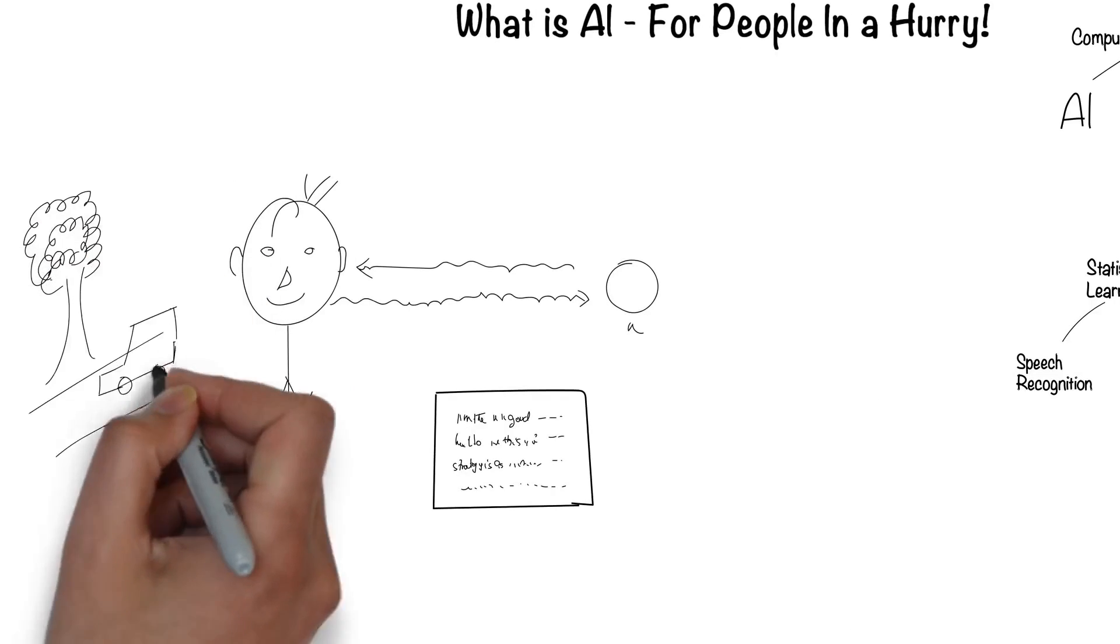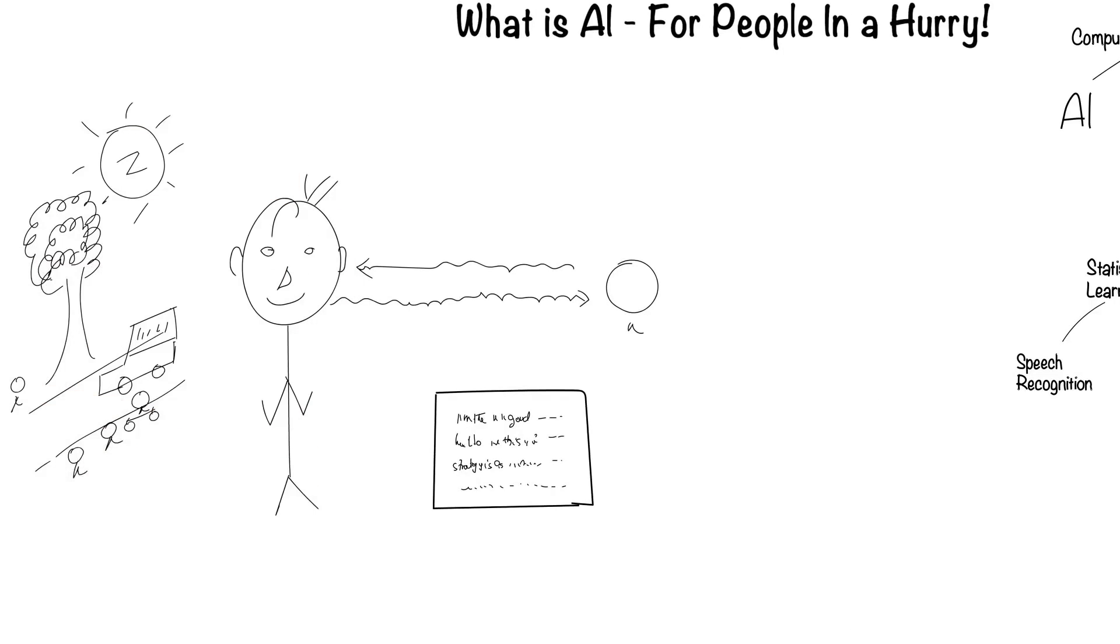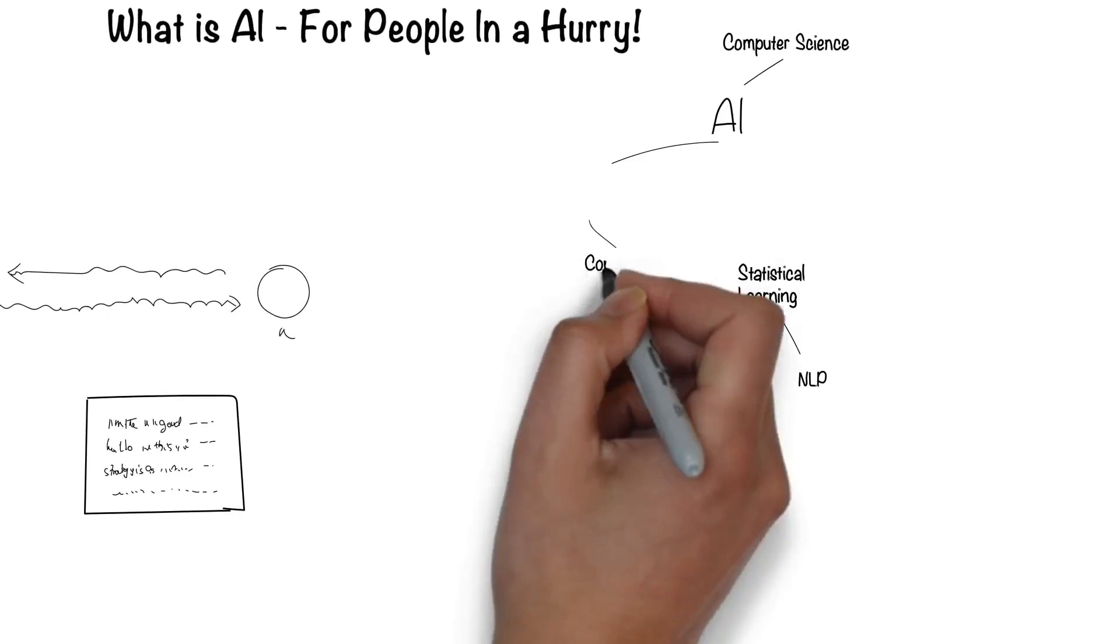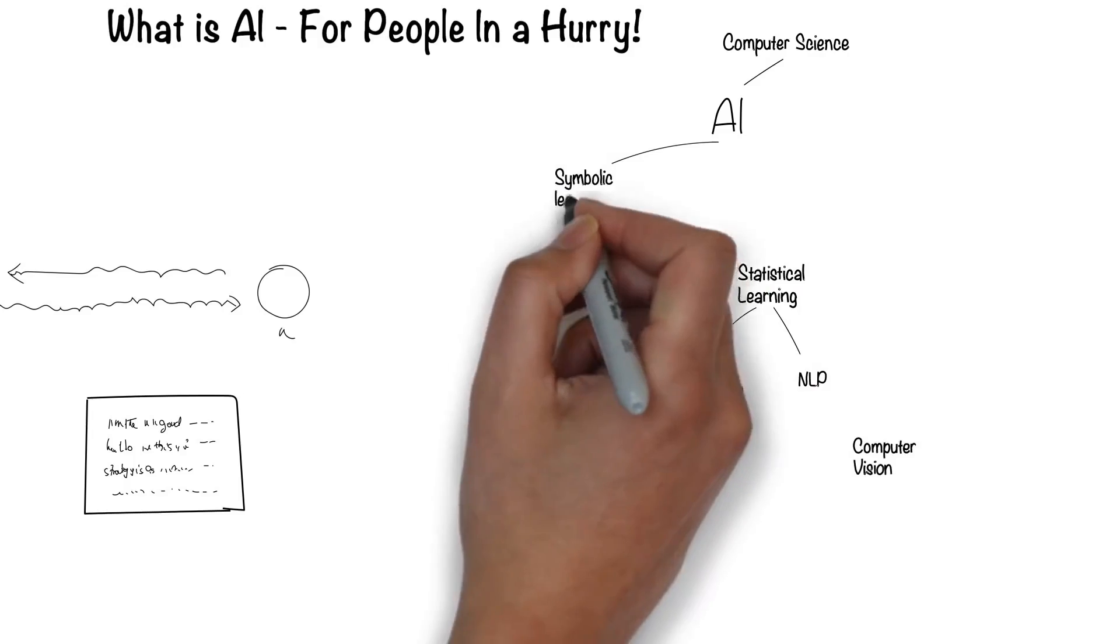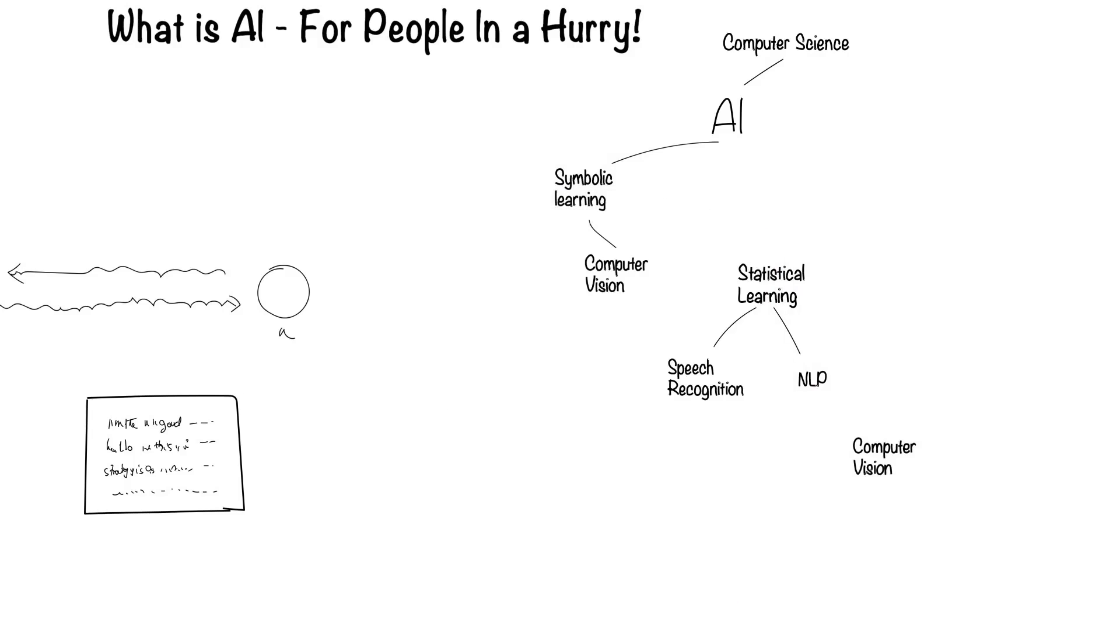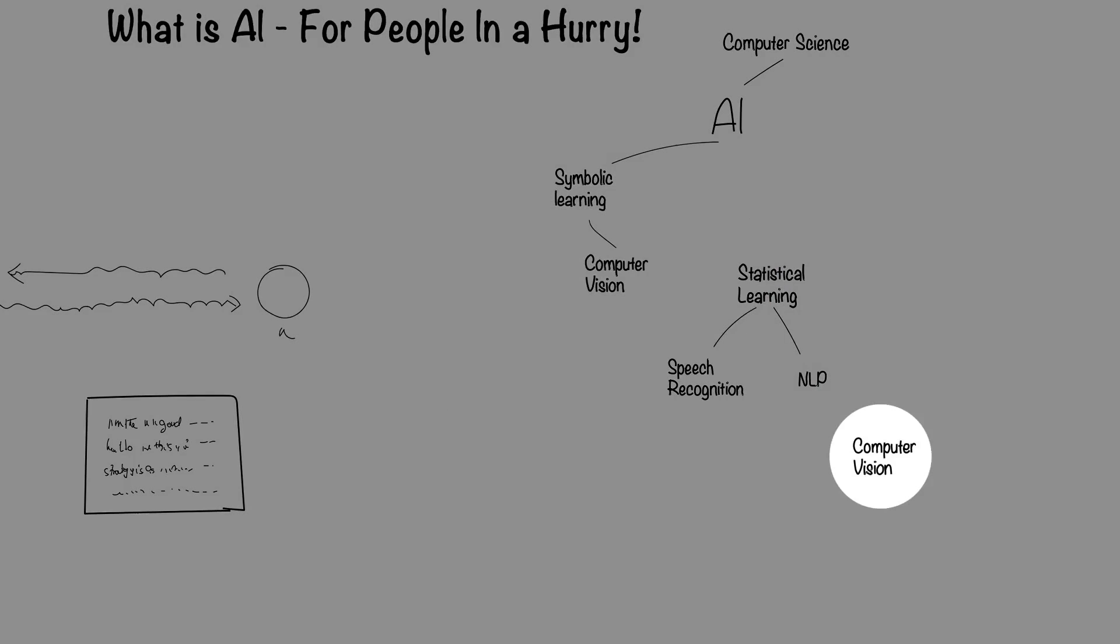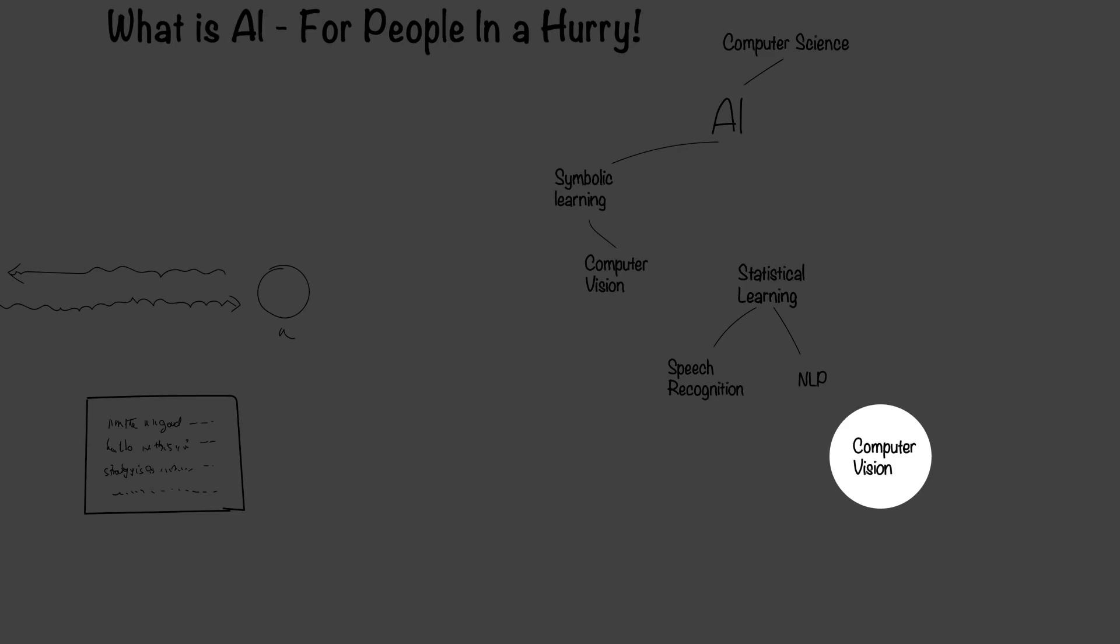Humans can see with their eyes and process what they see. This is the field of computer vision. Computer vision falls under the symbolic way for computers to process information. Recently, there's been another way, which I'll come to later.